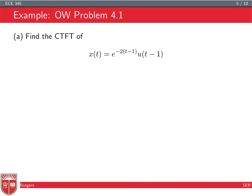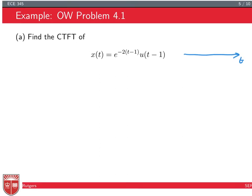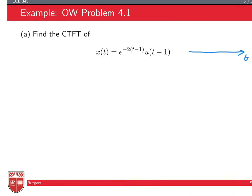Let's use this property to find the CTFT of the signal e^(-2(t-1)) * u(t-1). This signal starts at t equals one, is zero for t less than one, equals one at t equals one, and decays to zero as t goes to infinity.